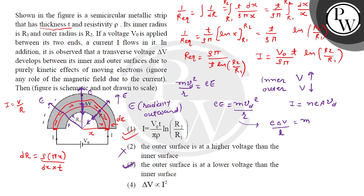Vd² is proportional to I². The centripetal electric field gives ΔV proportional to Vd², and since Vd is proportional to I, we get ΔV proportional to I². So the options that are correct for this question are option number one and option number four.